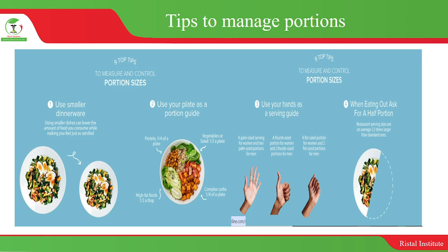Three, use your hands as a serving guide — we will look shortly at the concept of hand portions and know how much a palm-sized serving contributes for women and men. Four, when eating out, ask for a half portion, as Western serving sizes are on average 2.5 times larger than standard ones, so ask for the half portion instead of the full.